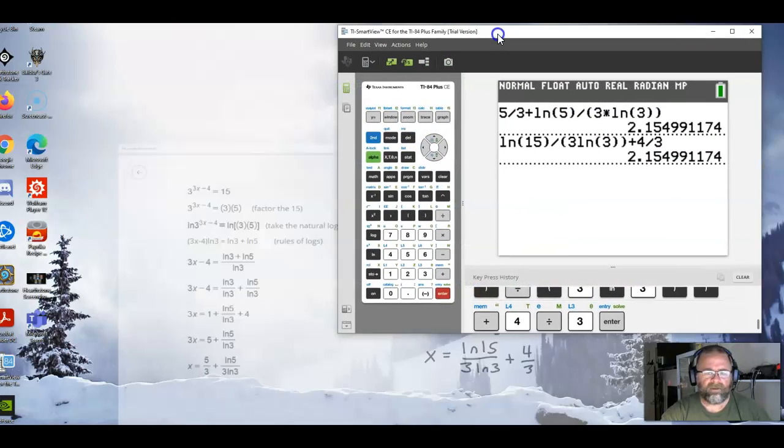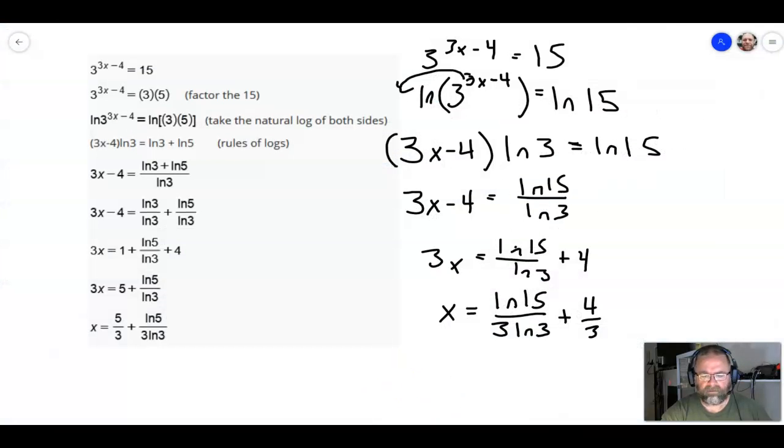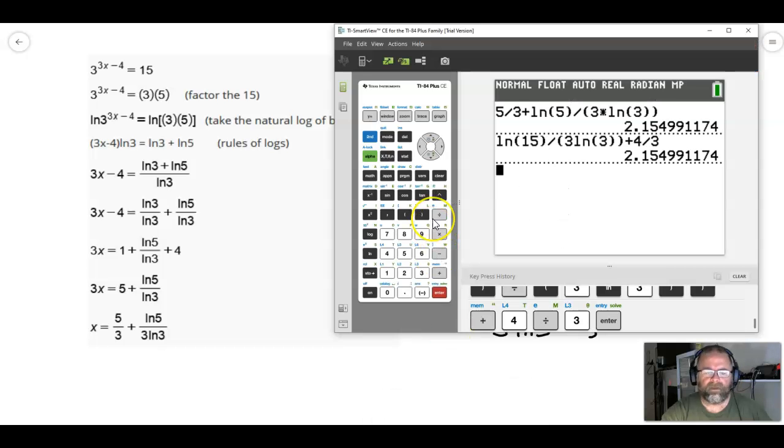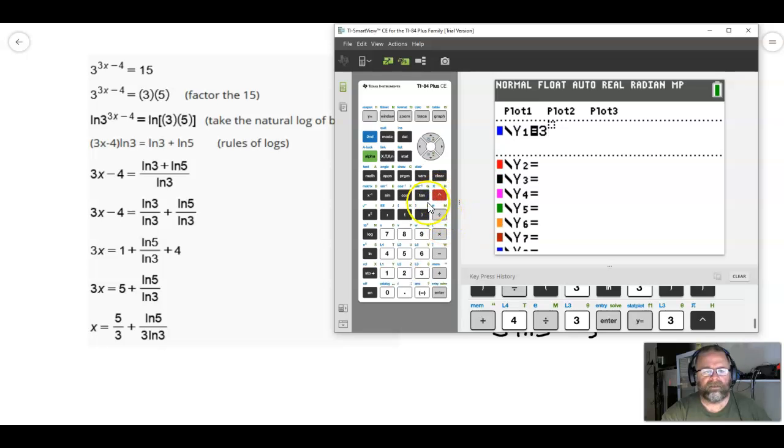And then the final thing that I want to do is to check these answers, and there's a real easy way to check them. And if I was only asked for the decimal approximation of the number and not the exact value with the natural logs, I could also use this method to solve it. And that is, we go to y equals, and we're going to put one side in here, in y1, so 3 raised to the 3x minus 4.